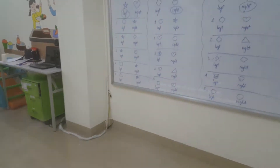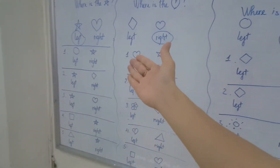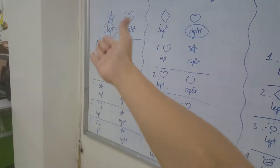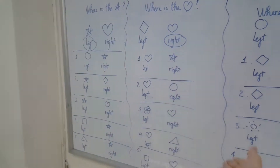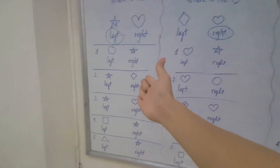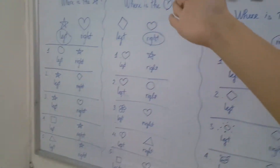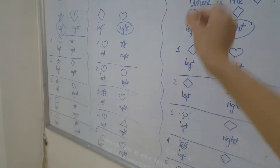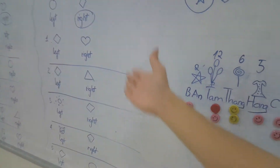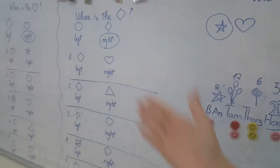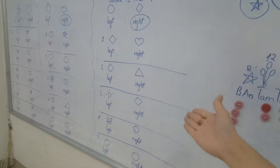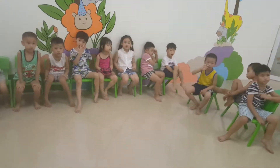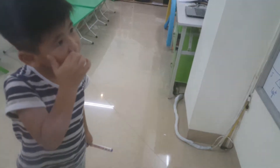Today's lesson: we will recognize where is left and where is right. With this column we find a star and circle where it is. With this column we find the heart — where is the heart, we circle. And with the left one we find the diamond — where is the diamond, you circle left.